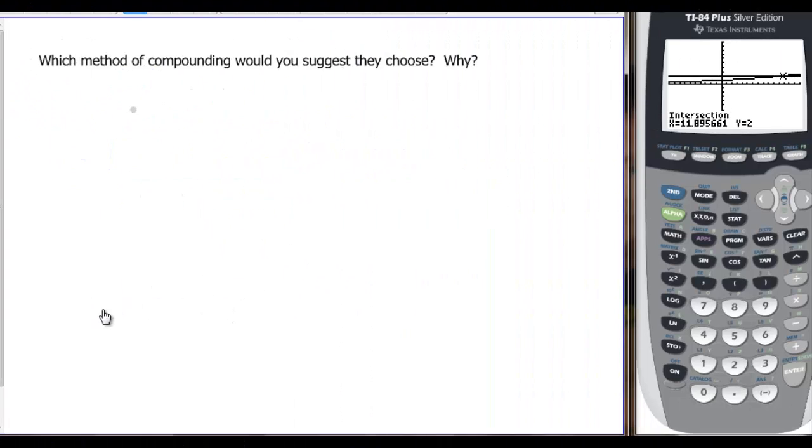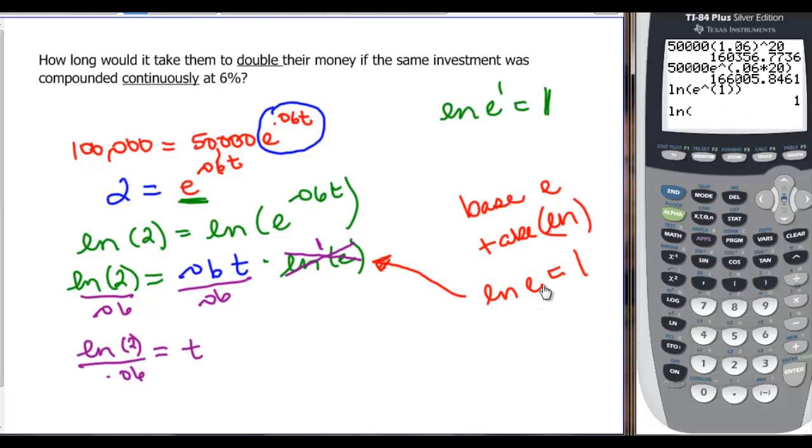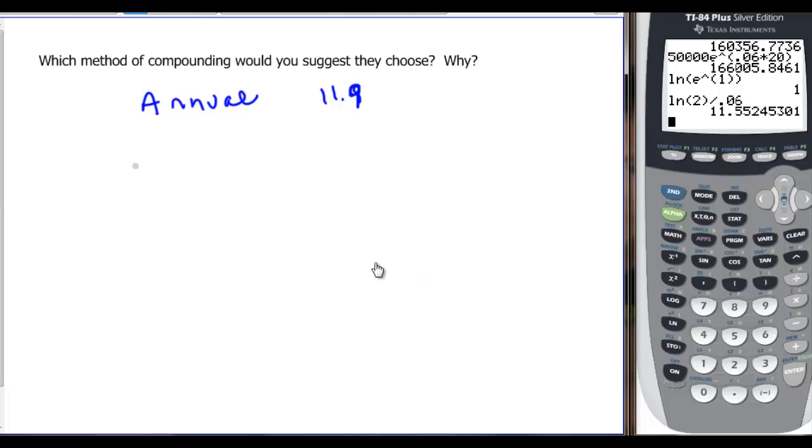Which method of compounding would you choose and why? If you remember when it was annual, we could double our money in we just found out 11.8 or 9 years, almost 12 years. And when we did it by, we never did figure out what this number was when we did it natural log, or when we had base e, continuous. So ln 2 divided by 0.06 gives us 11.55, so continuous was 11.6, so I would go with continuous because it doubles faster. You're going to get more money quicker if you go continuously. Thank you.